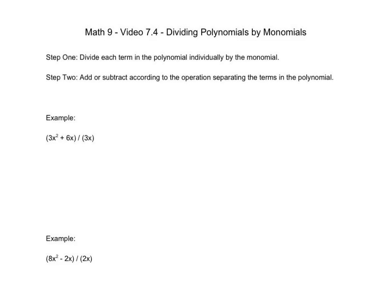There's basically a pretty simple rule that we can use to do this, and when we do that, it doesn't need to be that challenging at all. So basically, step one, we are going to divide each term in the polynomial individually by the monomial.